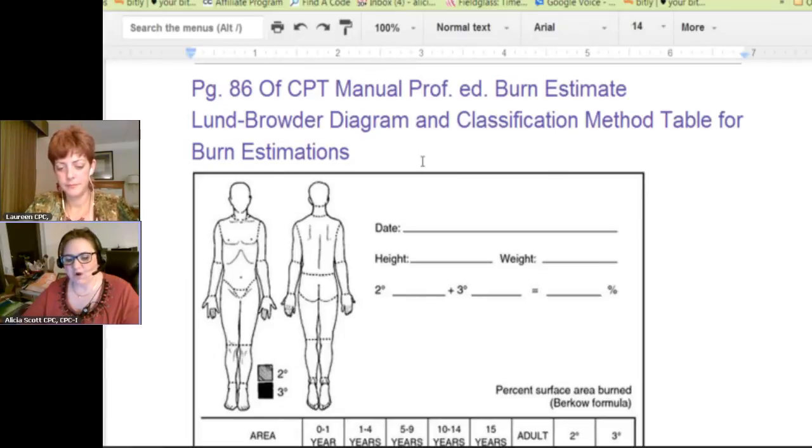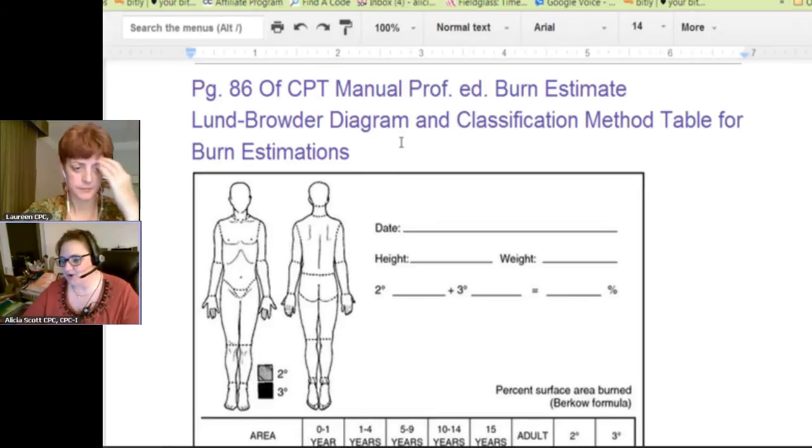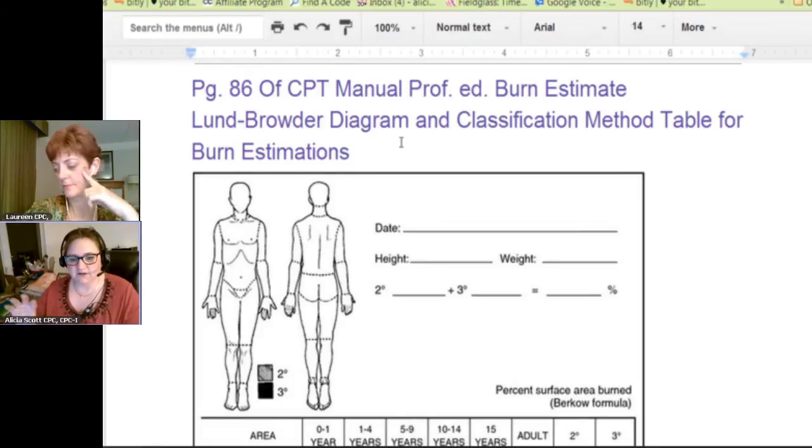This is what they use versus rule of nines or in association with rule of nines. Of course, we've always used the rule of nines before and for the most part, a lot of people get that memorized and it works great for an adult. Then they had a rule of nines for an infant because of course, an infant's head is not the same size as an adult's head as far as percentage of the body.